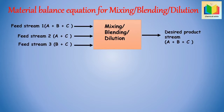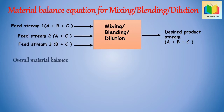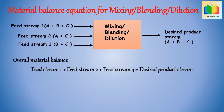Now let's see how to write a material balance equation for mixing, blending and dilution operations. In this figure we can see the product stream is obtained by mixing or blending or diluting feed stream 1, feed stream 2 and feed stream 3. For overall material balance we take input equal to output, hence overall material balance is: Feed Stream 1 + Feed Stream 2 + Feed Stream 3 = Desired Product Stream.